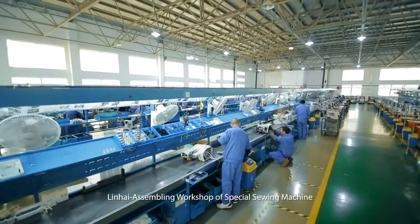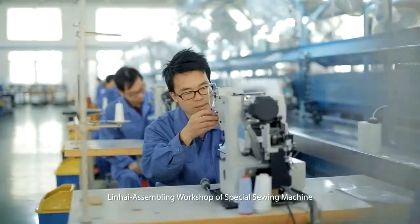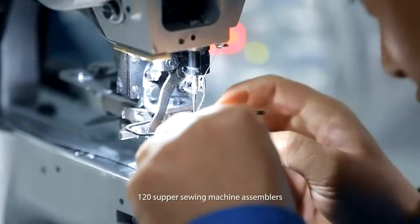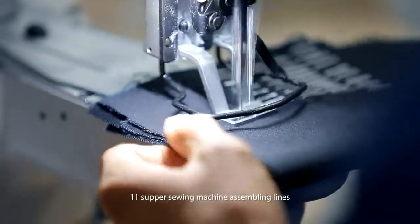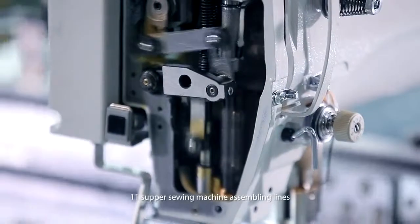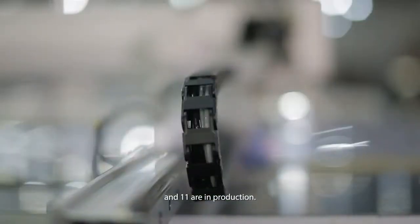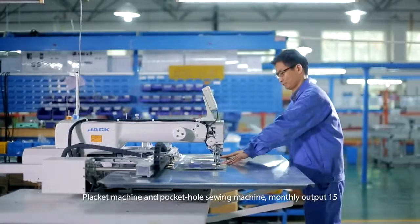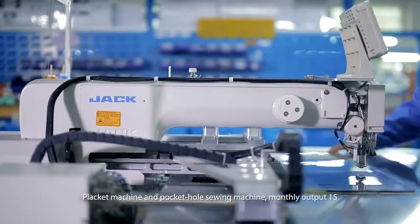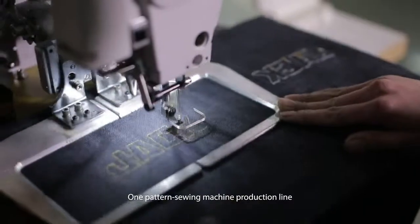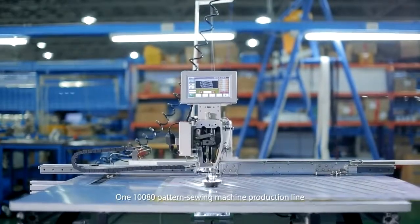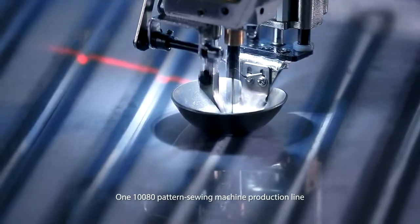Linhai Assembling Workshop of Special Sewing Machine has 120 special sewing machine assemblers and 11 assembly lines in production. Products include buttonhole machines and pocket hole sewing machines, pattern sewing machines, with monthly output of 15,000 units and one 10,080 pattern sewing machine production line.